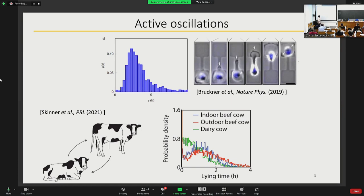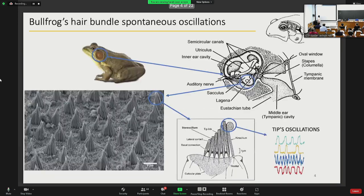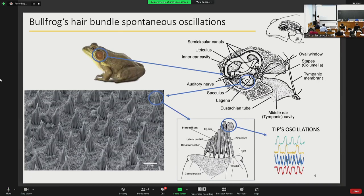This is something from experiment that we have to keep in mind for modeling this type of oscillation. The system that we are interested in is the case of hair bundles' spontaneous oscillation of the bullfrog's hair bundle.